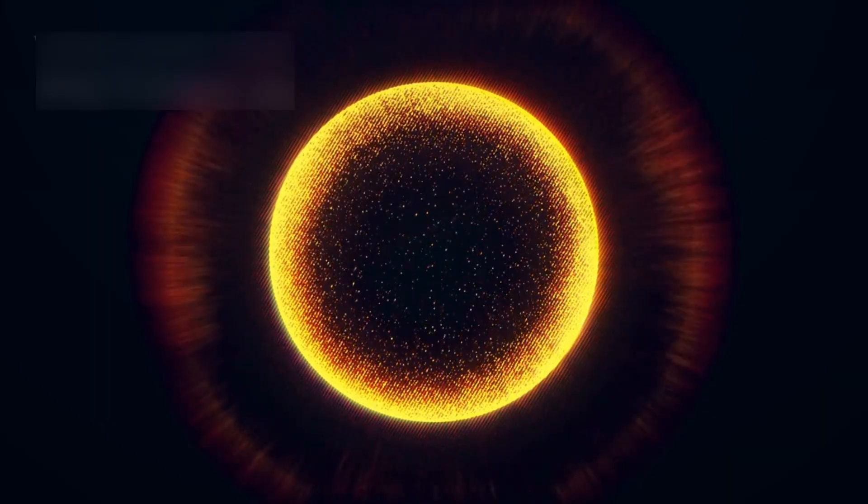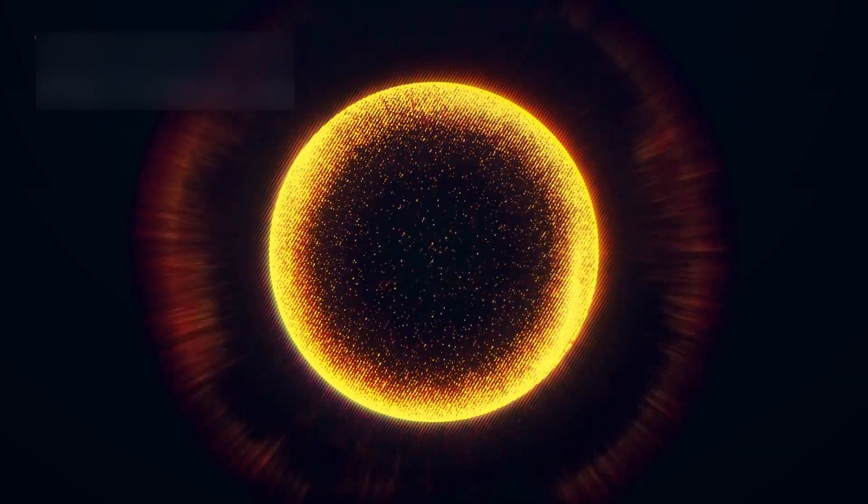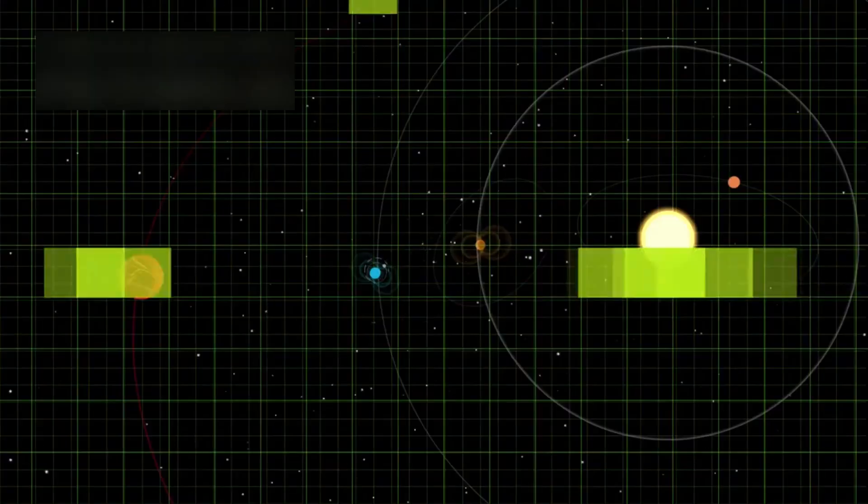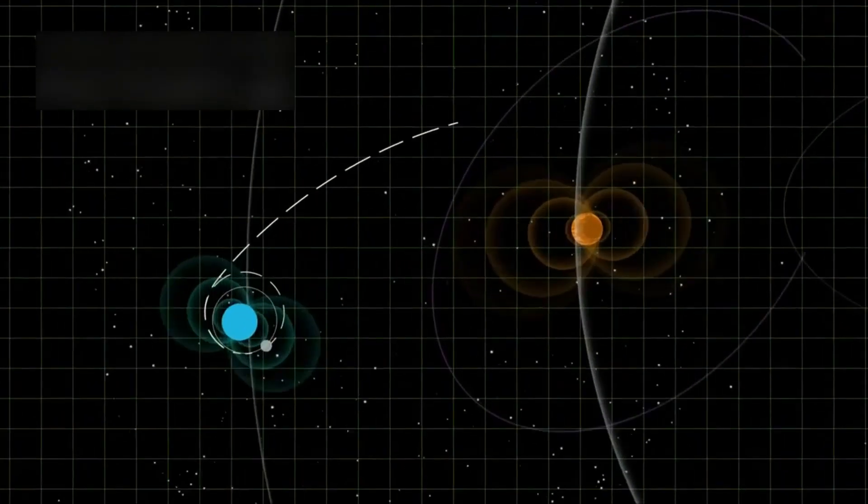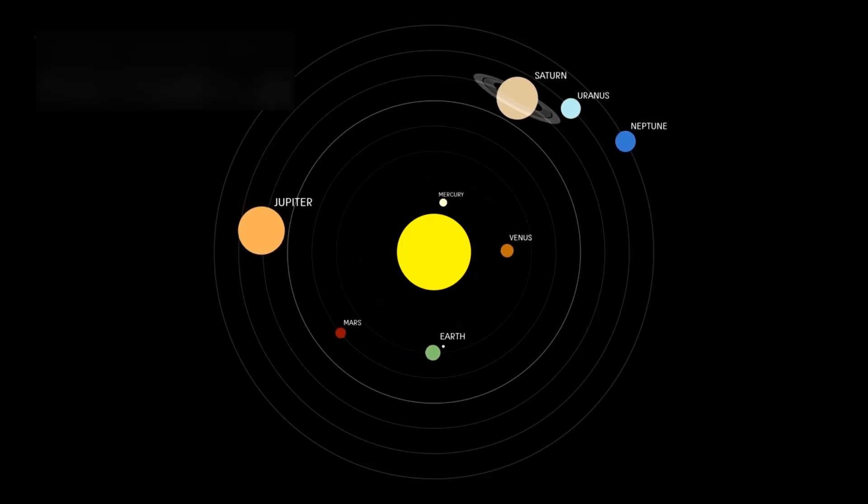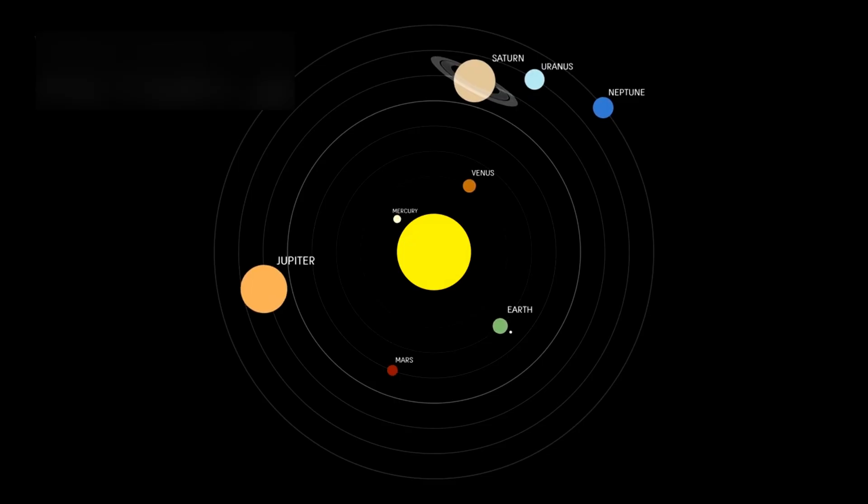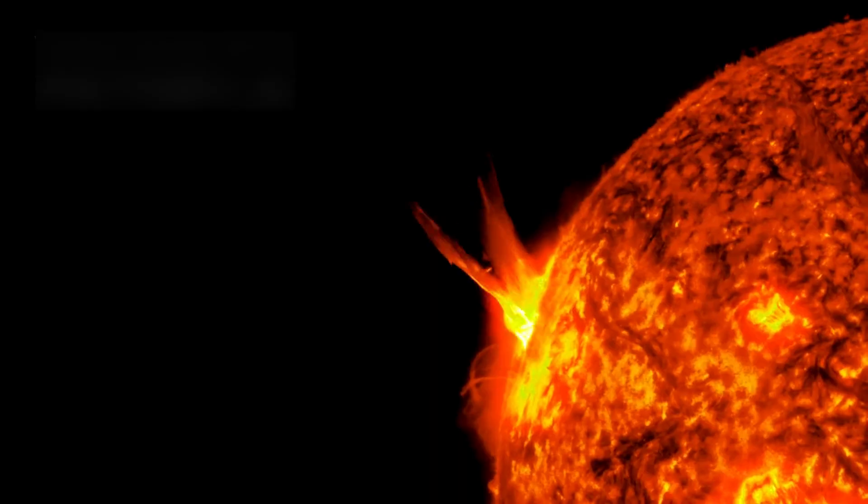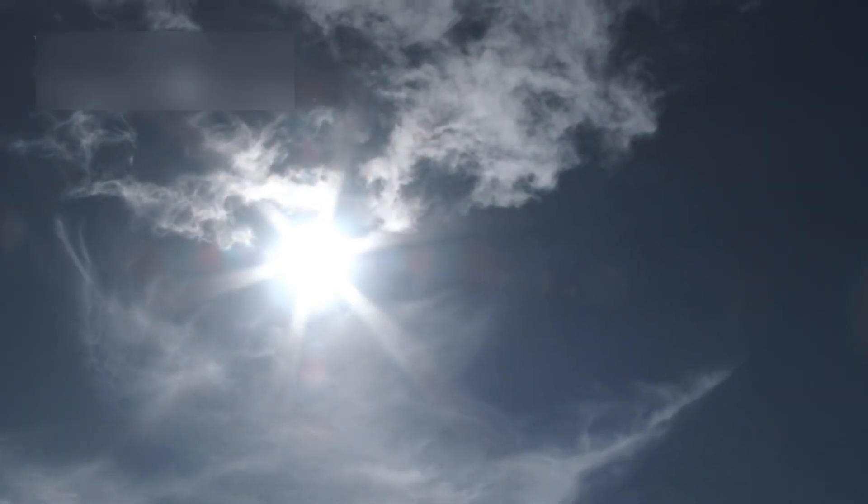Because of its unique position, Voyager 1 has helped scientists learn how interstellar winds interact with the Sun's energy. The area where our solar system ends and interstellar space begins isn't fixed. It expands and contracts depending on the Sun's 11-year activity cycle. When the Sun is more active, the boundary pushes outward. When it's quieter, space pushes back in. This discovery has helped refine how we understand the solar system's boundary with the galaxy.